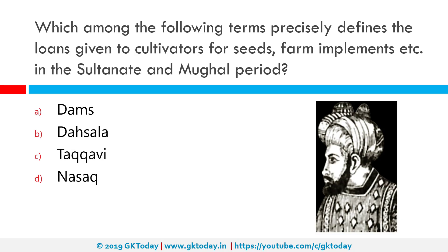Which among the following terms precisely defines the loans given to cultivators for seeds, farm implements, etc. in the Sultanate and Mughal period? The correct answer is Takavi. Muhammad bin Tughlaq adopted a stern policy where he provoked rebellion by the rural chiefs and peasants. But interestingly, he was also the first Indian ruler in recorded history to advance loans, or Takavi, to the villagers for rehabilitation following a disastrous famine.